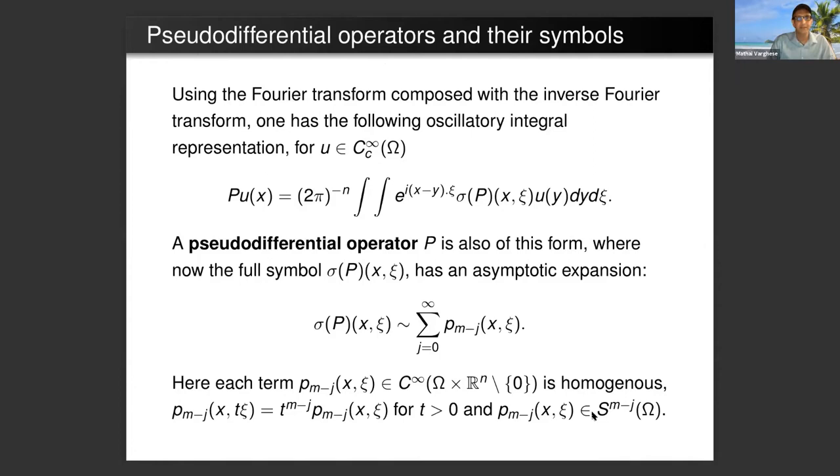Using the Fourier transform composed with the inverse Fourier transform, one has an oscillatory integral representation for u, a compactly supported function on omega, so Pu(x) is some universal constant and you have this exponential e^{i(x-y)·ψ}, this kind of like a Fourier transform variable, and here σ the symbol and u(y)dydψ. And a pseudodifferential operator P is written in a complicated way because it easily generalizes to a pseudodifferential operator.